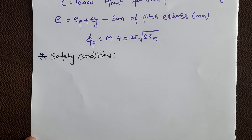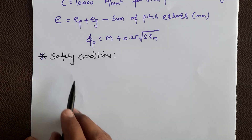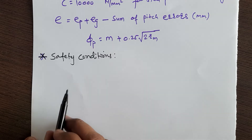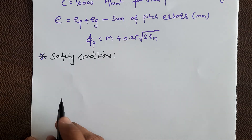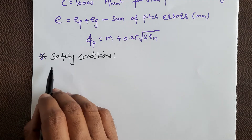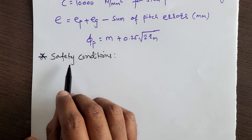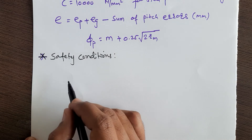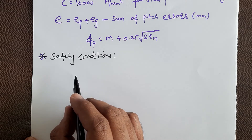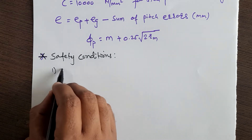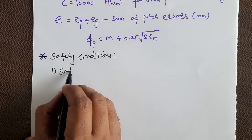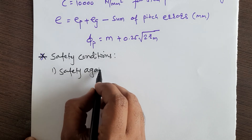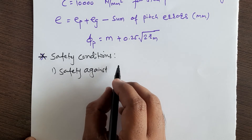The next topic is safety conditions — to avoid failure in gear design. At the end of the design process, you have to check whether your design is safe or not. There are two safety conditions: the first is safety against bending failure.